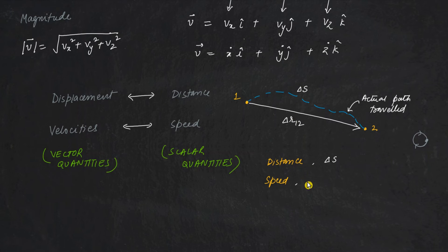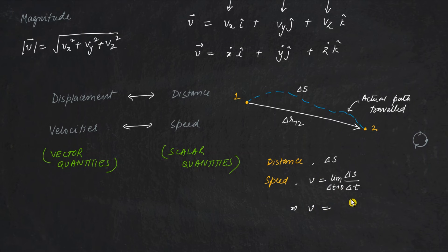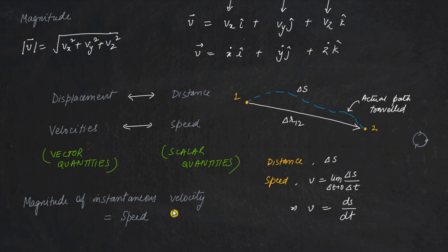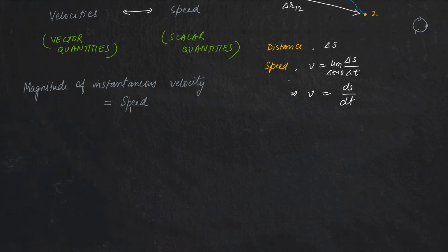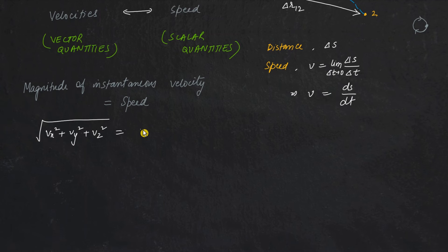Similarly, instantaneous speed is defined as the time rate of change of distance for an infinitesimally small time period — delta t tends to zero. Speed v is simply ds/dt, the time rate of change of distance with respect to time. Speed is not a vector quantity. The relationship between speed and velocity is that the magnitude of the instantaneous velocity equals the instantaneous speed: the square root of (vx² + vy² + vz²) equals the speed.